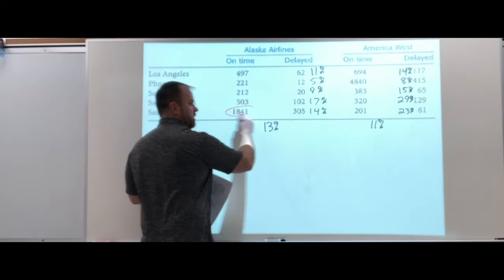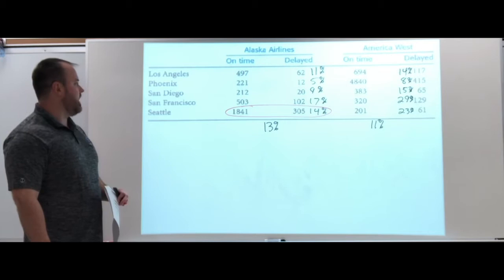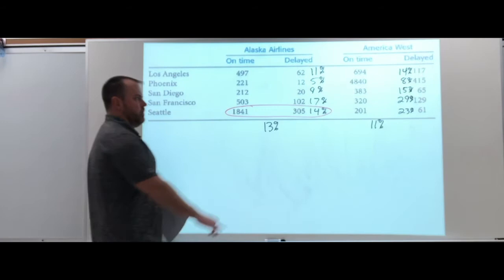If we look at where the high volume is for Alaska, the most flights are coming out of Seattle. That's over 2,000 flights coming out of Seattle. All the rest are 600 is the next highest at San Francisco, but all the rest are well below 2,000.